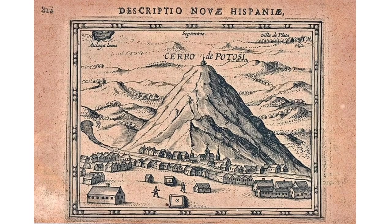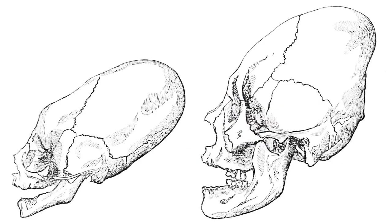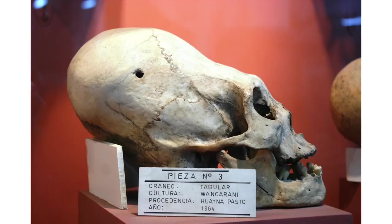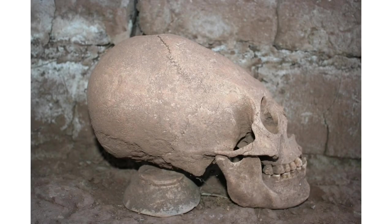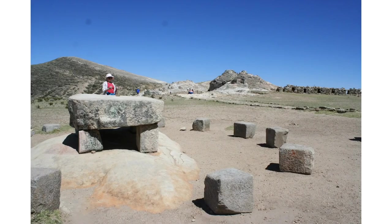Next we're at Cerro de Potosi, and here again elongated skulls have been found dating back around 3,000 years. And then the Wankarani culture, again about 3,000 years ago, with extremely elongated heads. Next we're going to Tiwanaku and Pumapunku, and this is a very elongated head that probably dates back about 2,000 years.